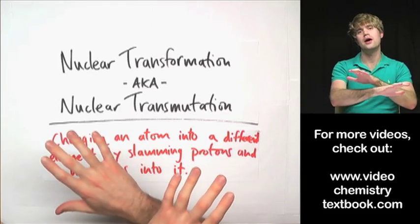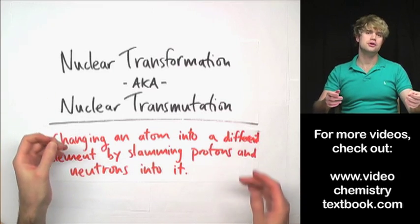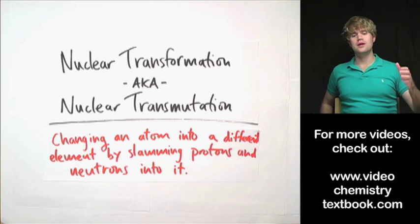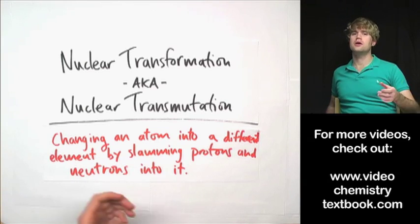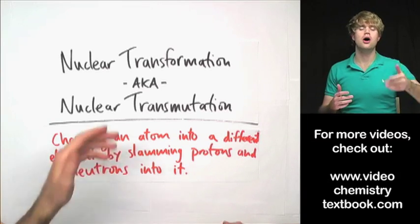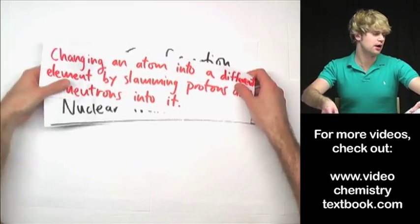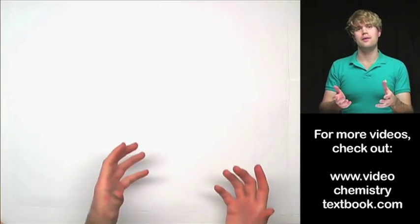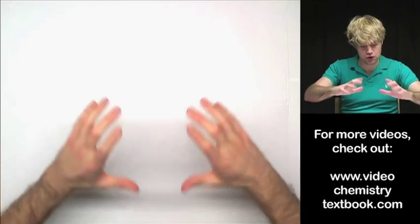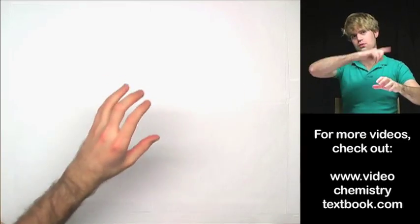We're going to talk about how to write equations for it, and then we're going to see how nuclear transmutation can be used in the lab to make elements that we can't find in nature. These are called trans-uranium elements, and all of them have atomic numbers above 92. So let's get started and look at a diagram of what nuclear transmutation would look like if we could zoom in to an atom and be able to see all the protons, neutrons, and electrons that make it up.